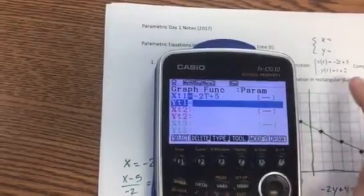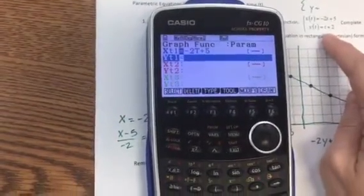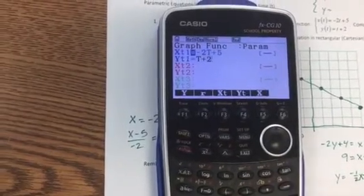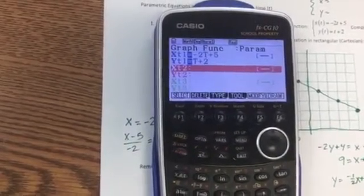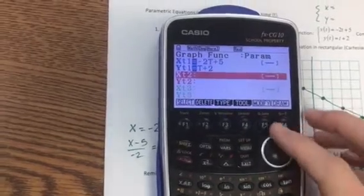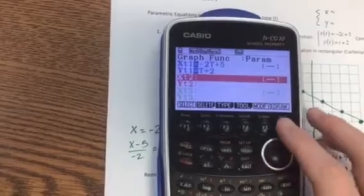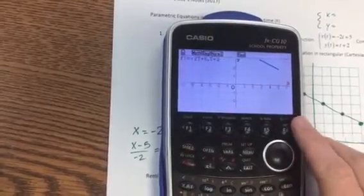So it was negative 2t plus 5, and then the other one is t plus 2, so hitting this, t plus 2. And now I can, before I tell it to graph, I should have done this before I started, but I'm going to go to draw. It might be helpful to change my window.